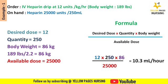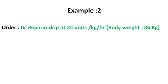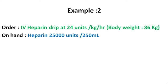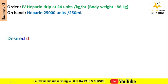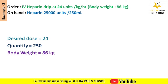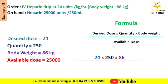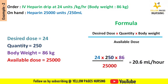We get the answer 10.3 ml per hour. Example 2: doctor's order is IV heparin drip at 24 units per kg per hour, body weight is 86 kilogram, on hand is heparin 25,000 units per 250 ml. What will be the infusion rate set on the infusion pump? Here the desired dose is 24, quantity is 250, body weight is 86 kilogram, available dose is 25,000. Applying all into the formula we get the answer 20.6 ml per hour.